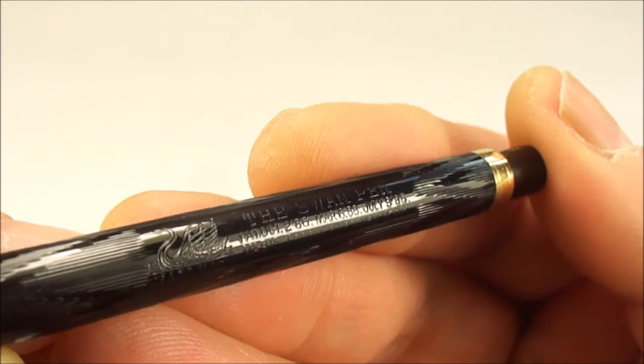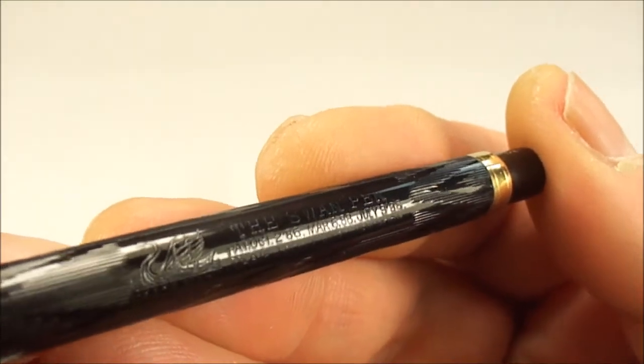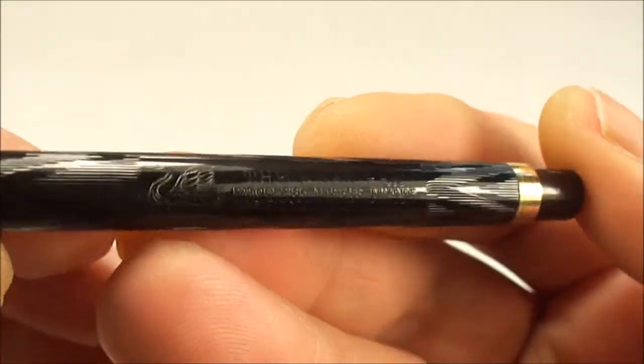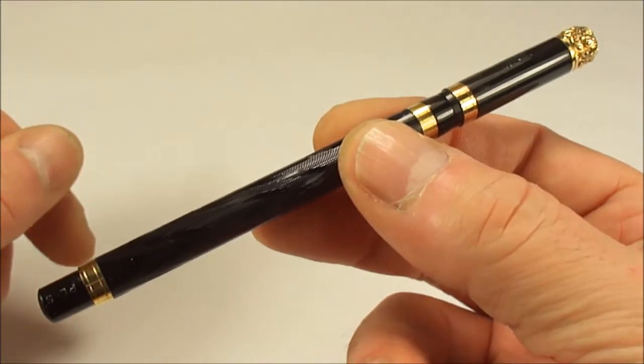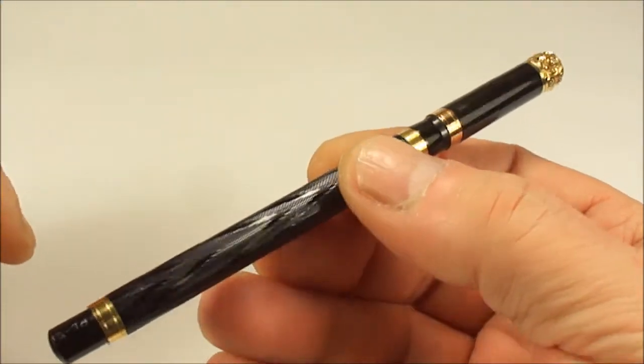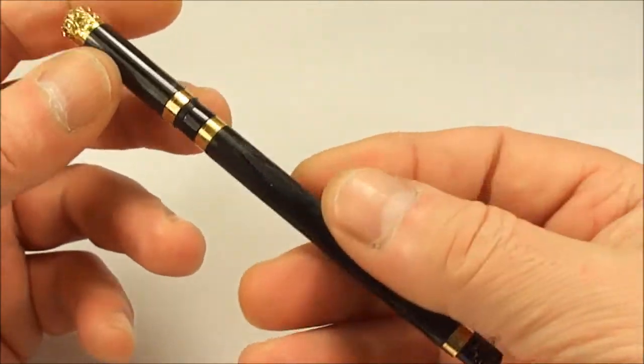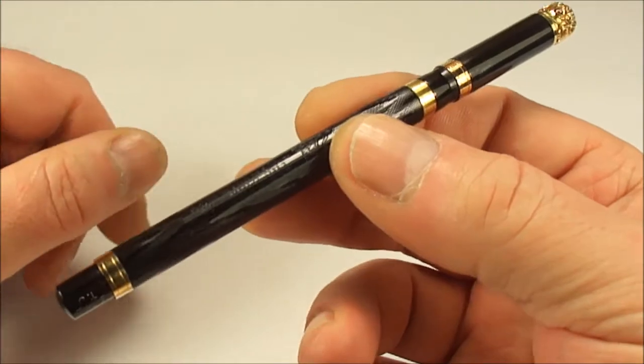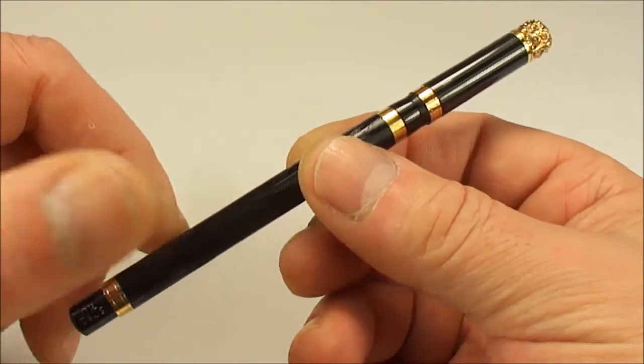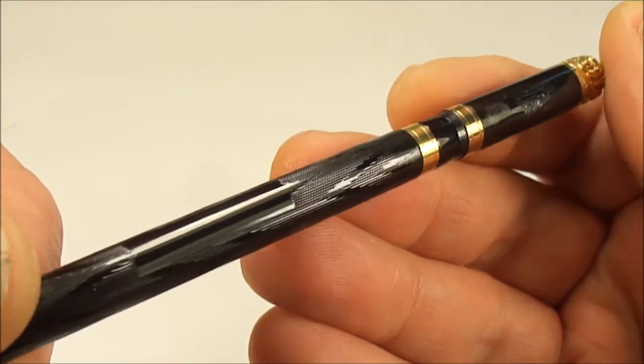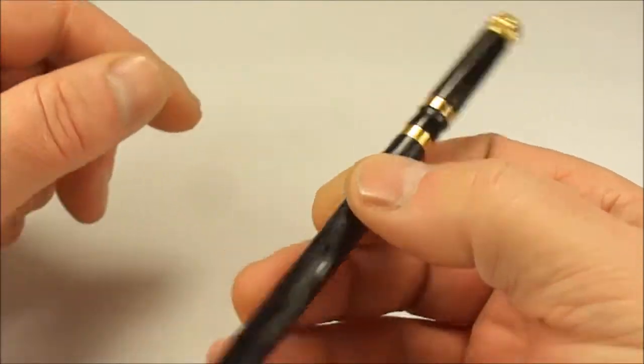The fact that it's a Mabie Todd and Bard again indicates to me it is a very early pen, before the Mabie Todd and Company Limited, etc. So I'm dating the pen from the last patent, 1895 onwards. So it may be the 1800s or even the very very beginning of the 1900s - very much an antique fountain pen. It's a long and slender pen. From the top of the cap to the bottom of the barrel, 134 millimeters capped, around 9 millimeters in diameter.